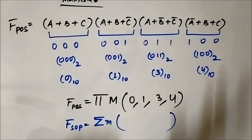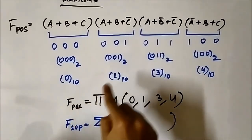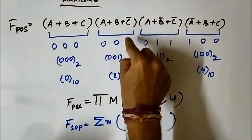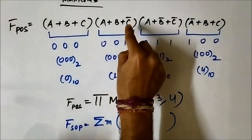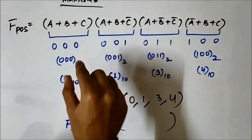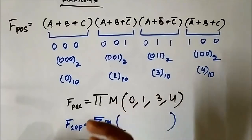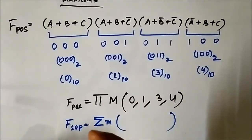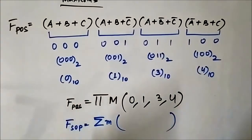It is critical to know whether it is SOP or POS because everything changes. In POS, complemented variables are 1 and uncomplemented are 0. In SOP, complemented variables are 0 and uncomplemented are 1. So everything will change. If we fail to identify the correct canonical form of the Boolean expression, our analysis will go wrong. So always pay attention to this.